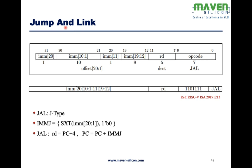Let's look at JAL — Jump and Link. It's of J-type. This is how the instruction looks: there is an immediate value from bit 20 down to 1, so overall 20 bits. To calculate the immediate value, we need to sign-extend this immediate value and then make the LSB 0. This is how we calculate the offset — the address used to jump from one instruction to another location.